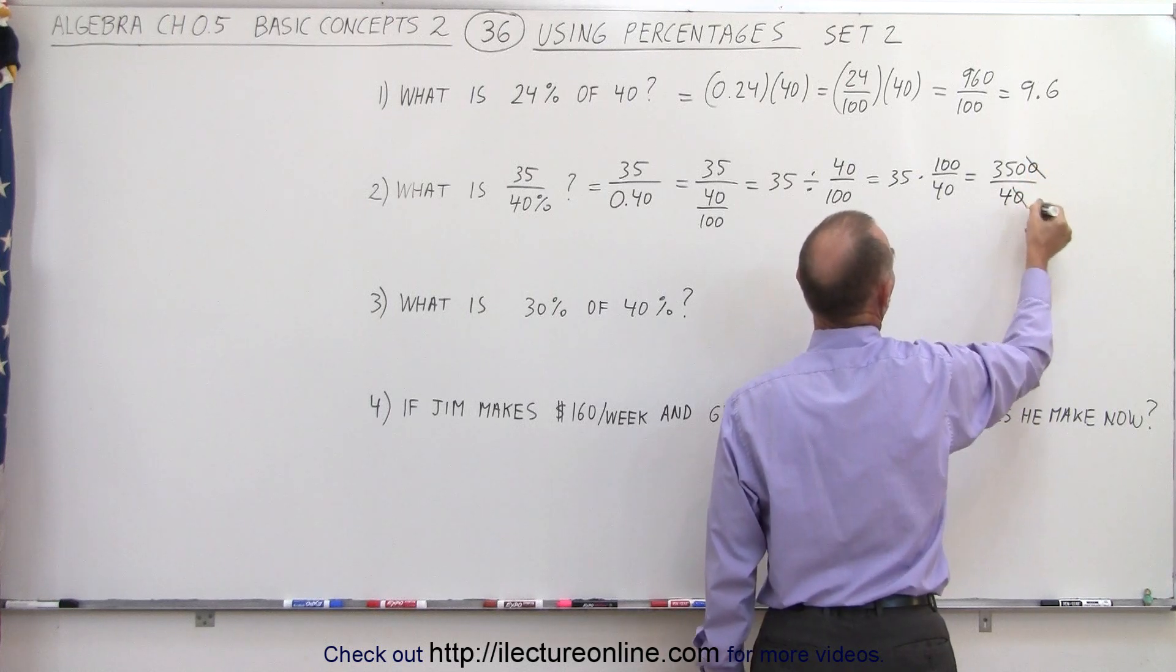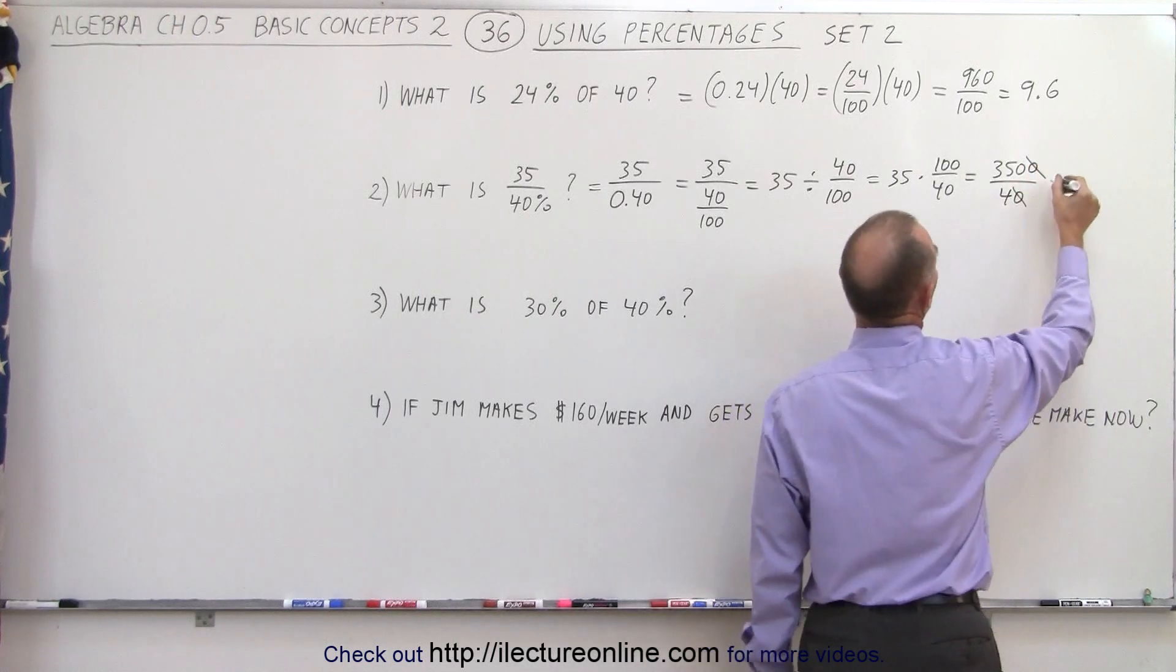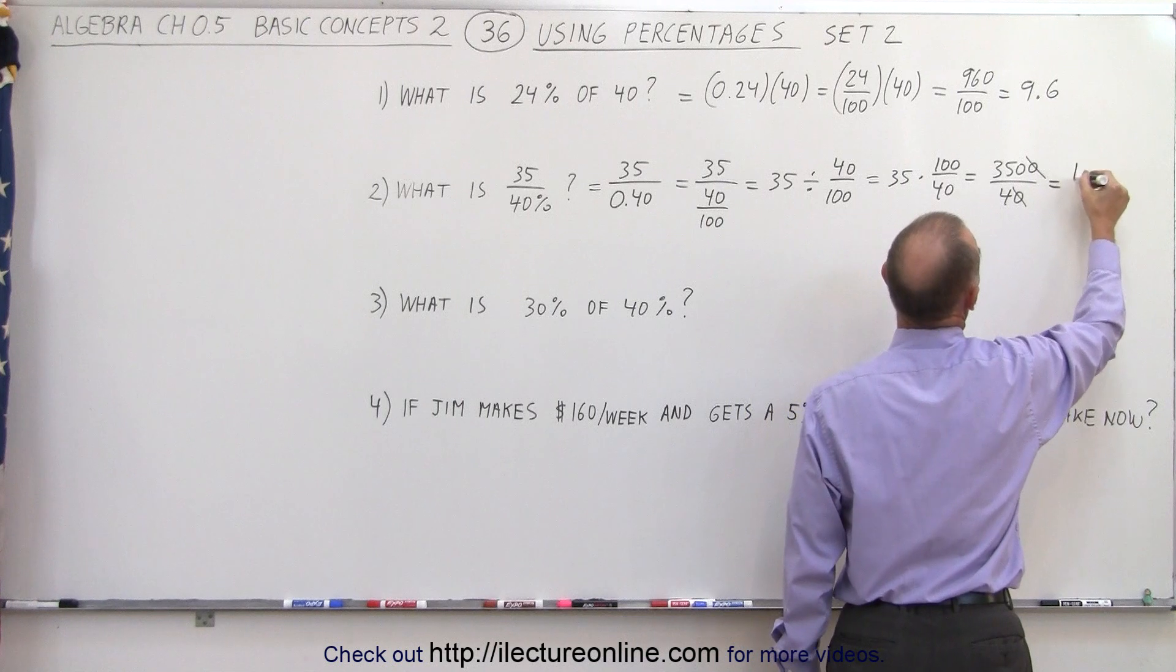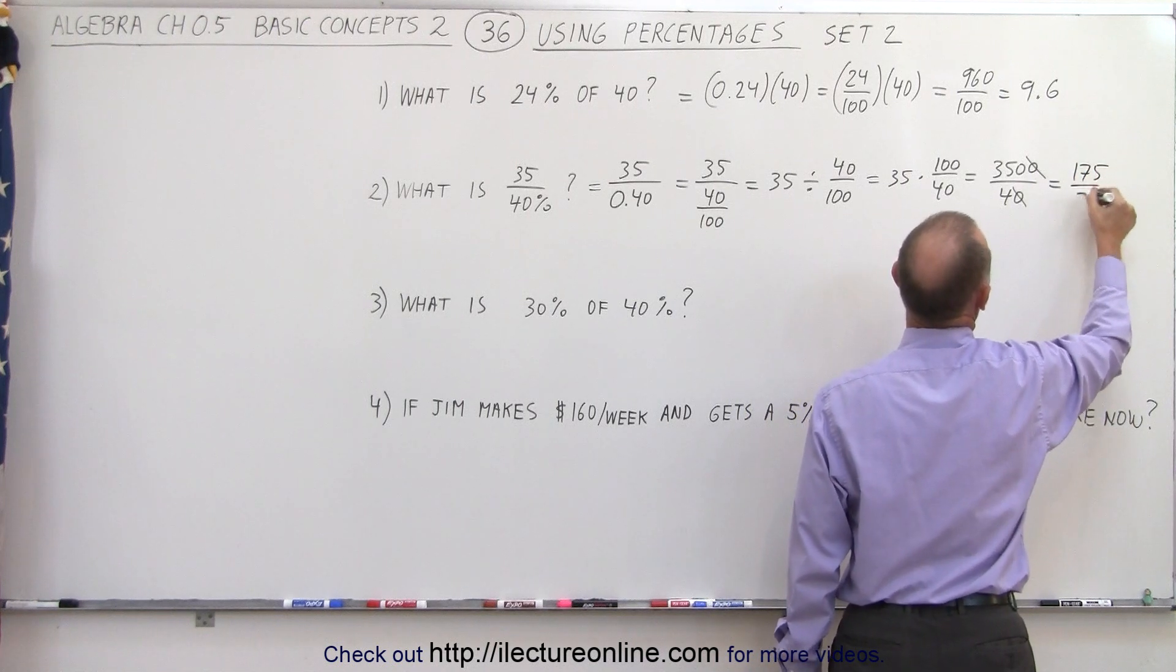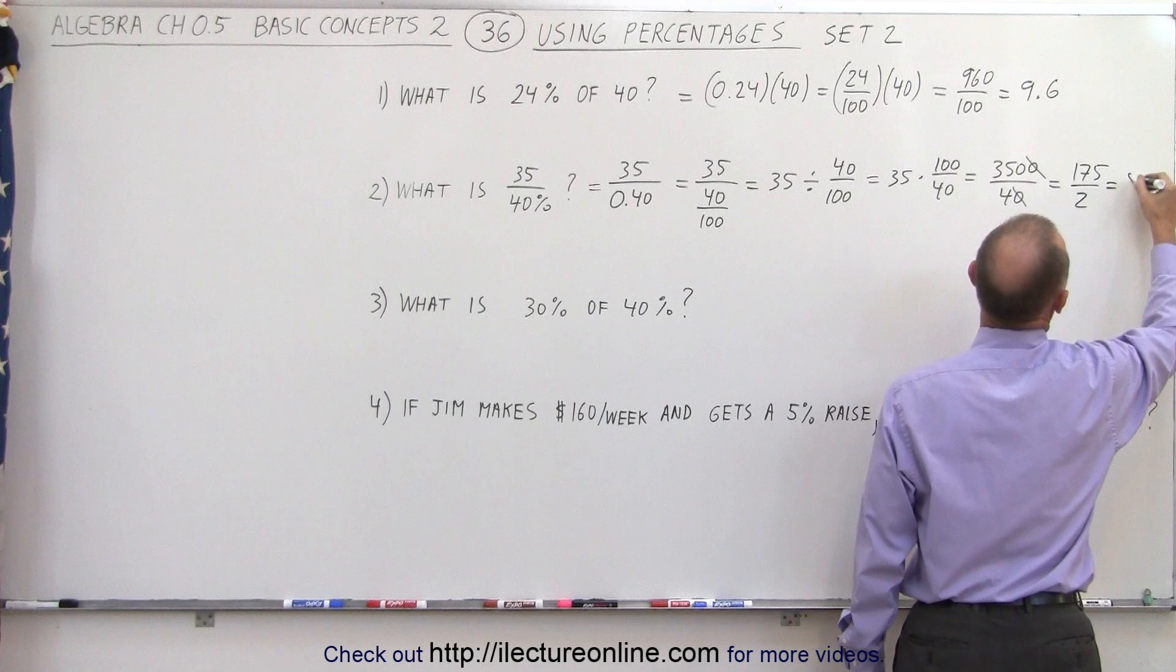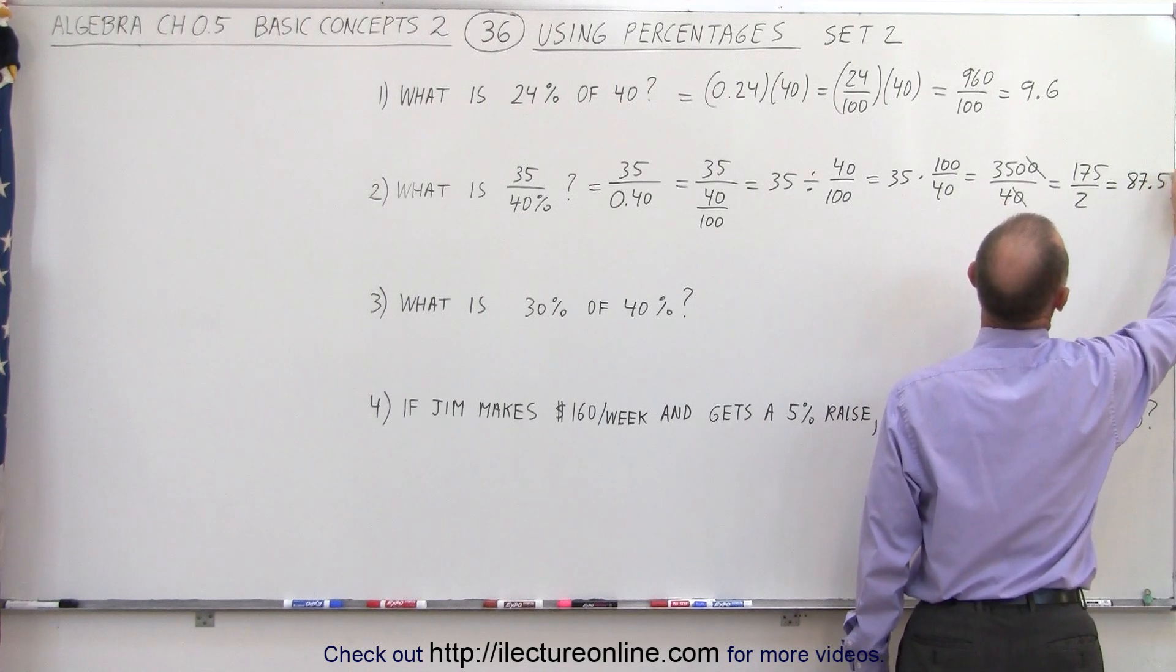Well, first of all, we can divide both sides by 10. And then we can say that this is equal to 175 divided by 2. And that is equal to 87.5.